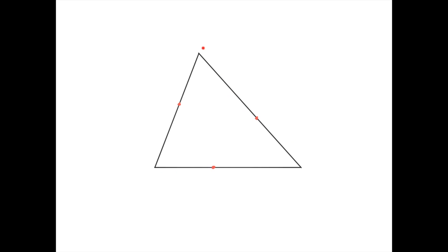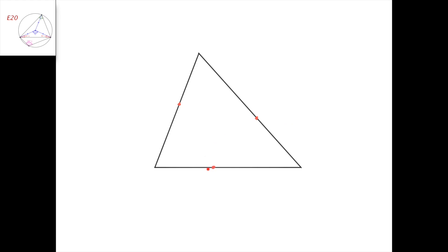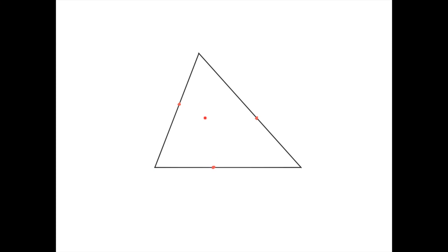Suppose we have a triangle and on each side we choose one point at random. Then we construct three circles — one through each vertex of the triangle and the two chosen points on its adjacent sides. We're going to prove that these three circles intersect at one point, and we're going to call it the Miquel point.